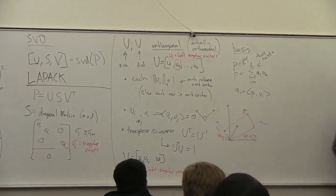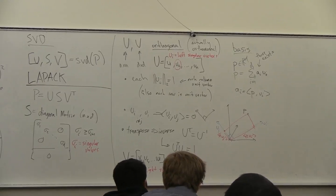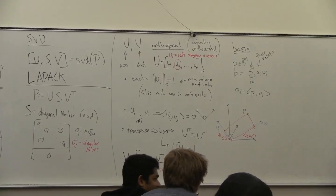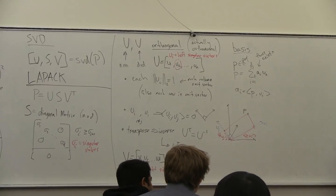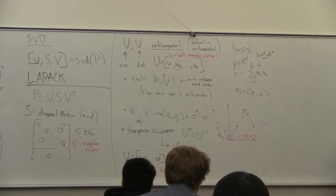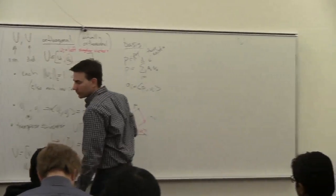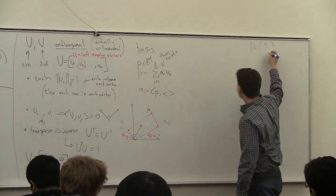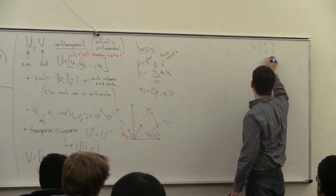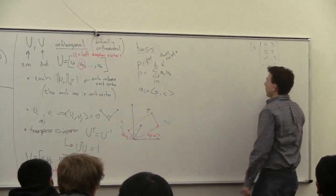Are there any questions? Why are they called singular? I'm not sure — it probably comes from some term in the linear algebra community but I don't know where exactly. So we're going to start with an example where we have a point set P written as the matrix: [[4, 3], [2, 2], [-1, -2], [-5, -2]].